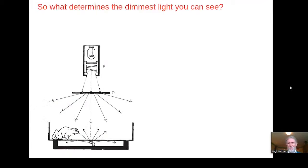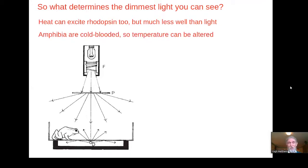So what does determine the dimmest light that you can see? Well, to work this out, let's not use a human, but instead a toad. And we use a toad for the following reason. Heat can excite rhodopsin too, but much less well than light. And amphibia, including toads, are cold blooded, so we can change their temperature, their environmental temperature, and therefore change the rate at which individual rhodopsin molecules in the rods will be excited by heat.